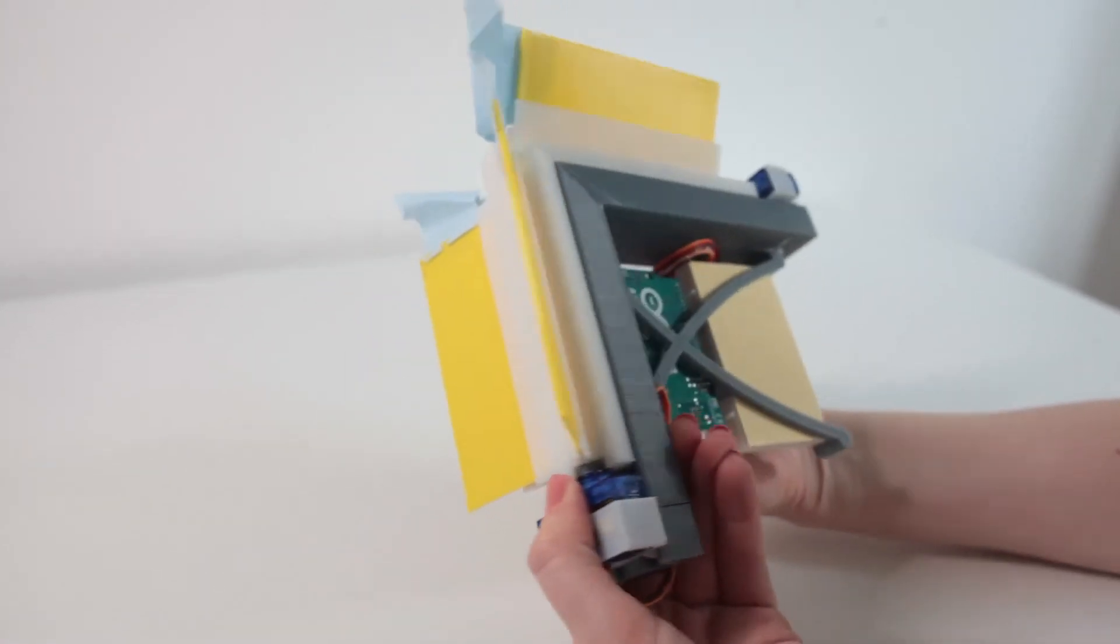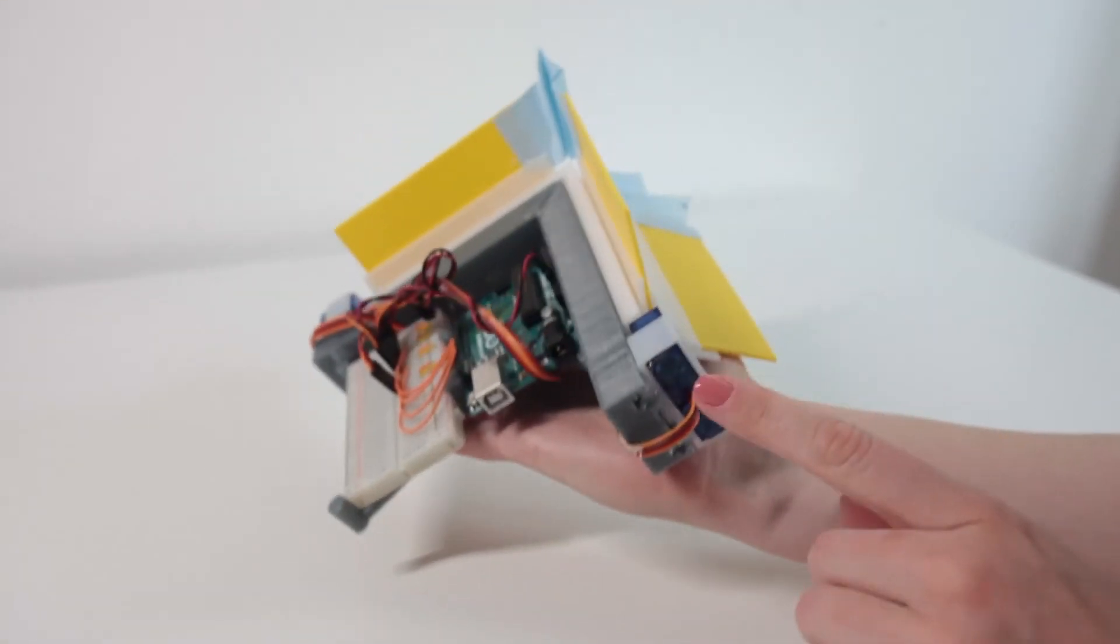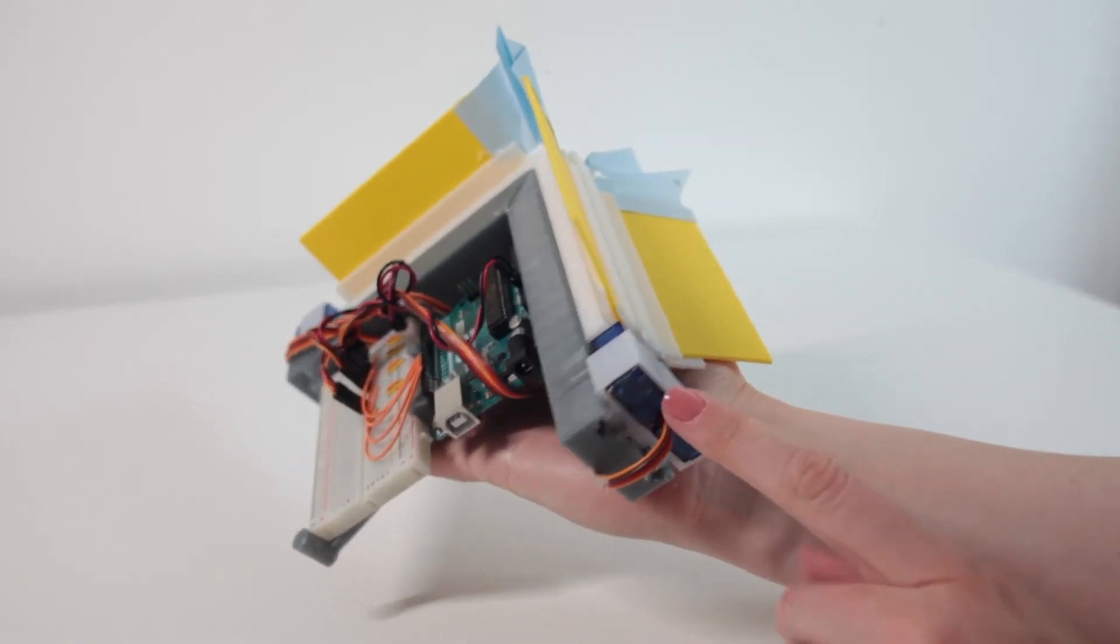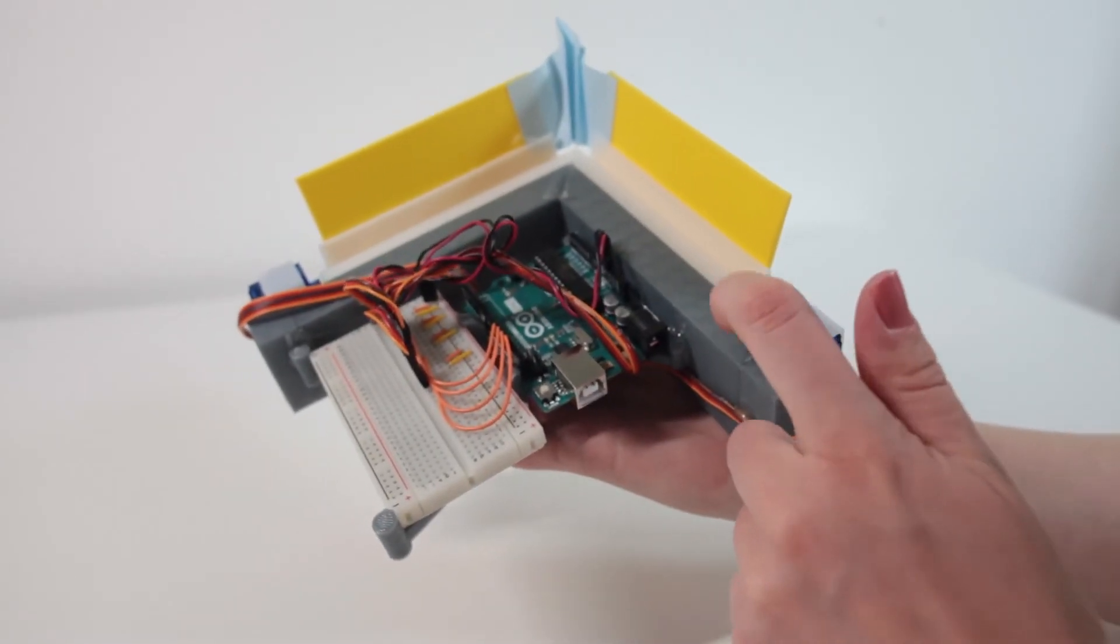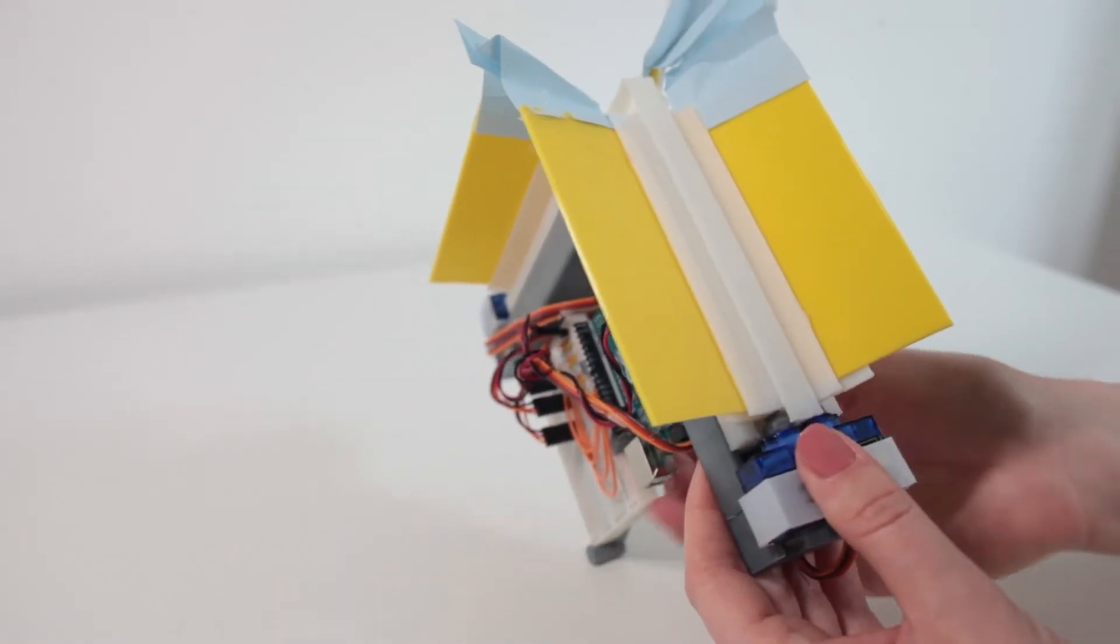We used the low power servo motors to move the flaps, but the placement of the motors in this prototype is not accurate. In the real product the motors will be integrated into the profile. To control the movement of the flaps we have used an Arduino UNO board.